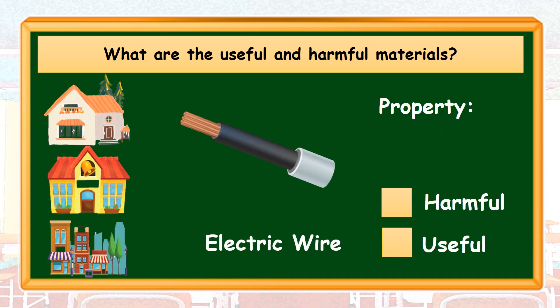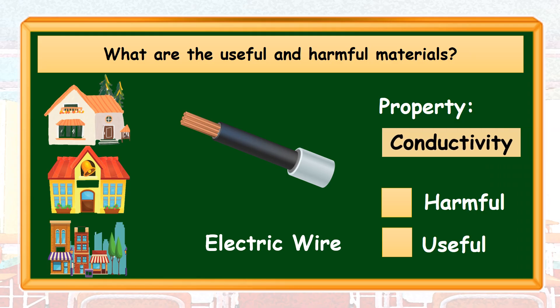The next material that we have is an electric wire. An electric wire possesses the property of conductivity, because the copper wire inside of it allows electricity to pass through. Based on its property, an electric wire can be harmful or useful. Its harmful effect is that someone can be electrocuted if the wire is electrically charged and touched with bare hands. For its usefulness, it is used to conduct electricity which allows appliances to work.